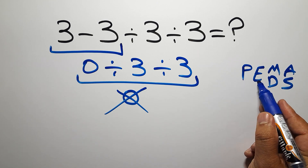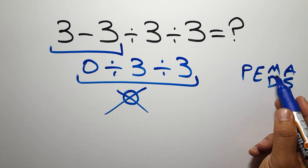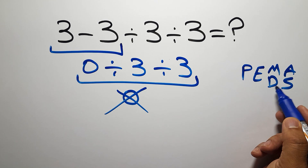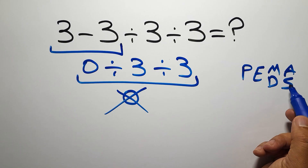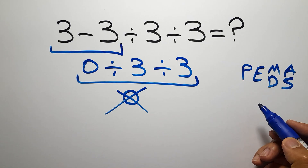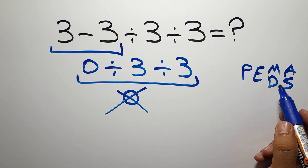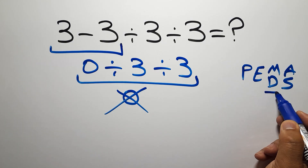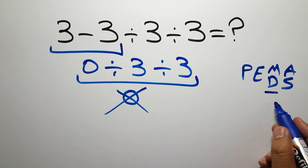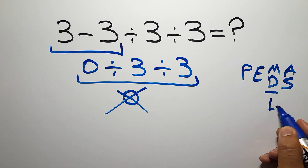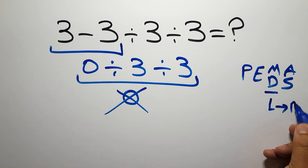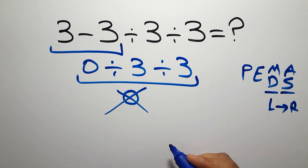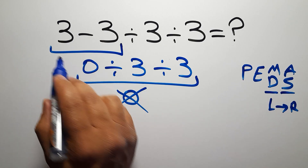First we have to do parentheses, then exponents, then multiplication or division, and finally addition or subtraction. Remember that multiplication and division have equal priority and we have to work from left to right, and the same applies to addition and subtraction.